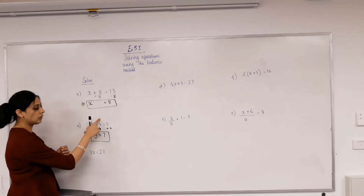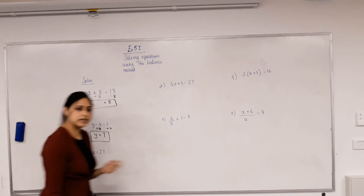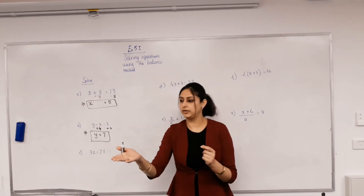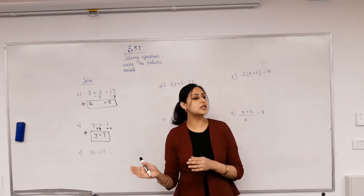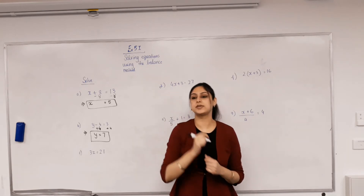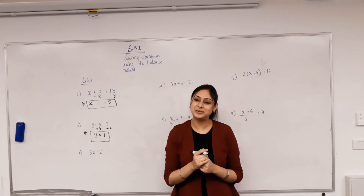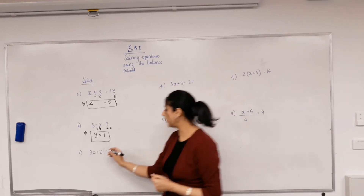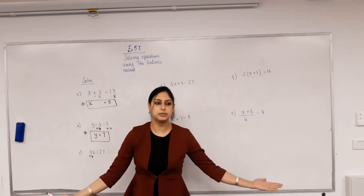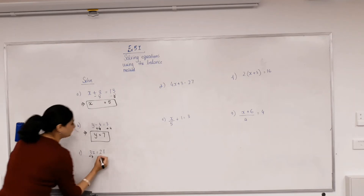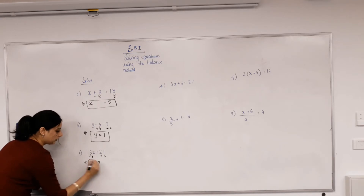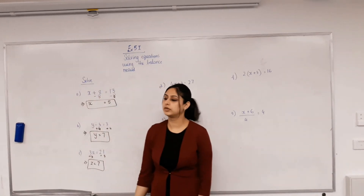Now: 3z. What does that mean? 3 times z. What has been done to z? It has been multiplied by 3. What's the inverse of that? Dividing by 3. So if I divide this side by 3, I do the same to the other side. This implies z equals 21 divided by 3, which is 7.